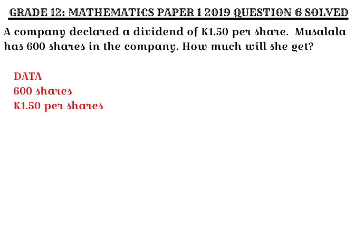I'm going to write 600 shares on top. I've put 0.00 because one kwacha fifty ngwe is a decimal number, so those two zeros are just holding the place values. Once we have done that, I'll draw the line and start multiplying. I'm multiplying by 1 kwacha — I write the K there so I don't forget the kwacha sign, because my answer should be in kwacha. 0 times 0 gives us 0 for each column.